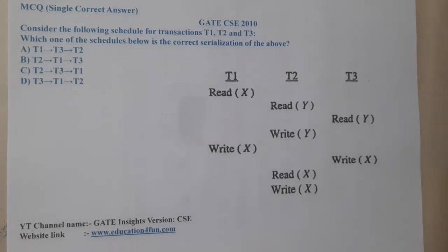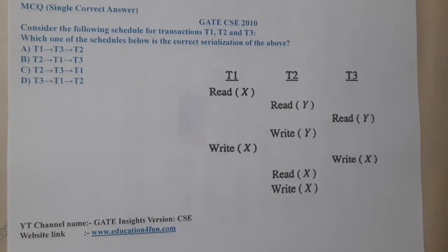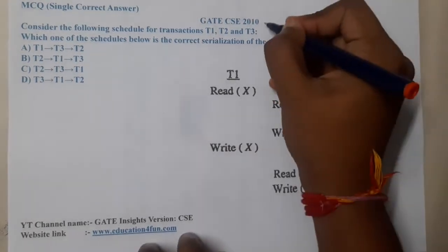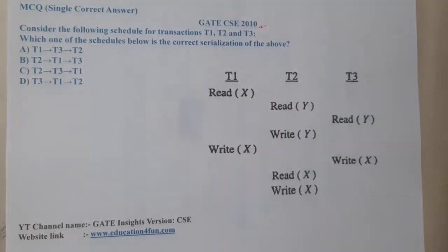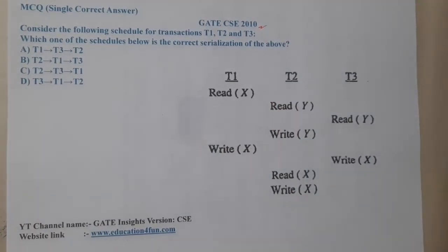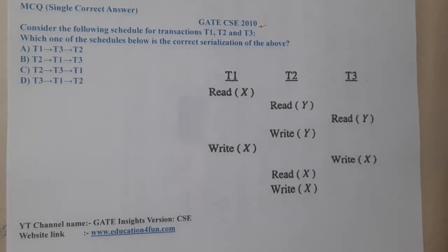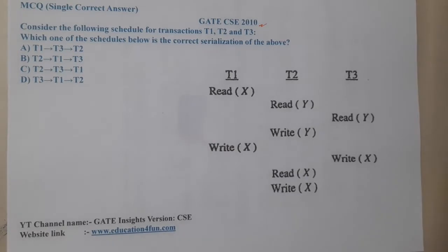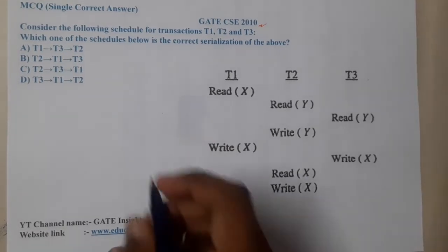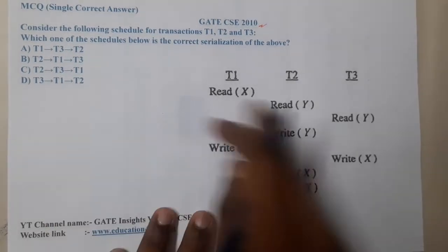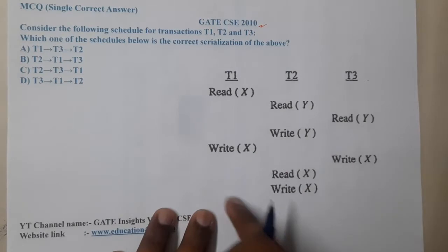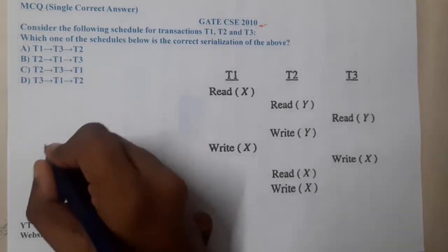Hello guys, welcome back to the next lecture. This question belongs to GATE CSC 2010. The question asks: consider the following scheduler with T1, T2, T3 as transactions — which of the following is the order for conflict serializability? The best part is that the diagram has already been drawn for us.